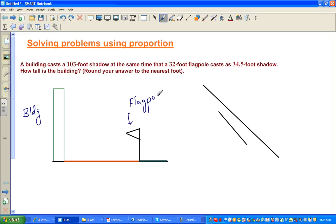Let me read the question again. The building is casting a 103-meter shadow, so this brown line is the shadow of the building, which is 103 feet.